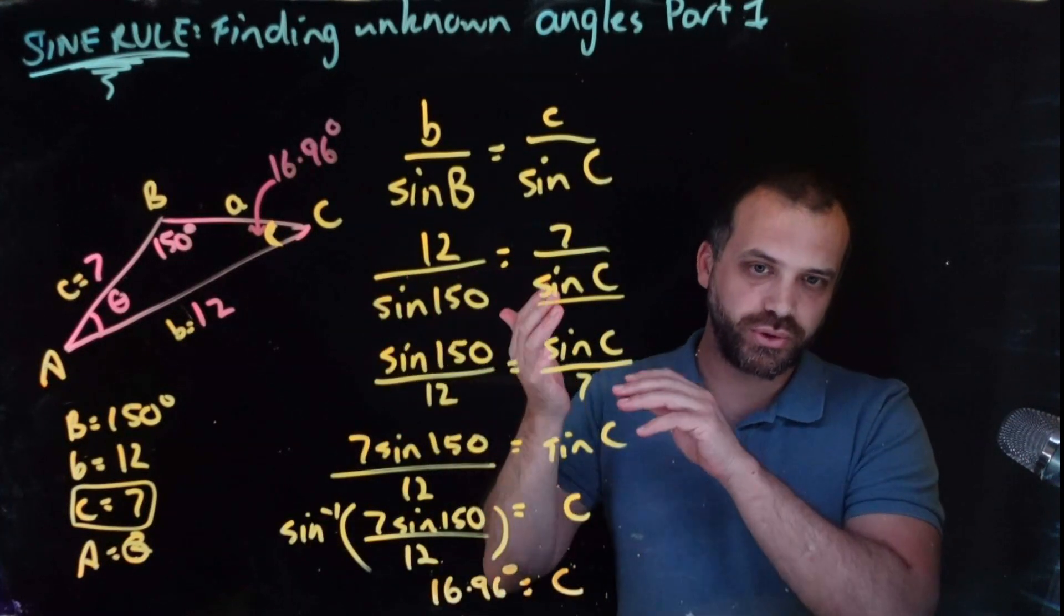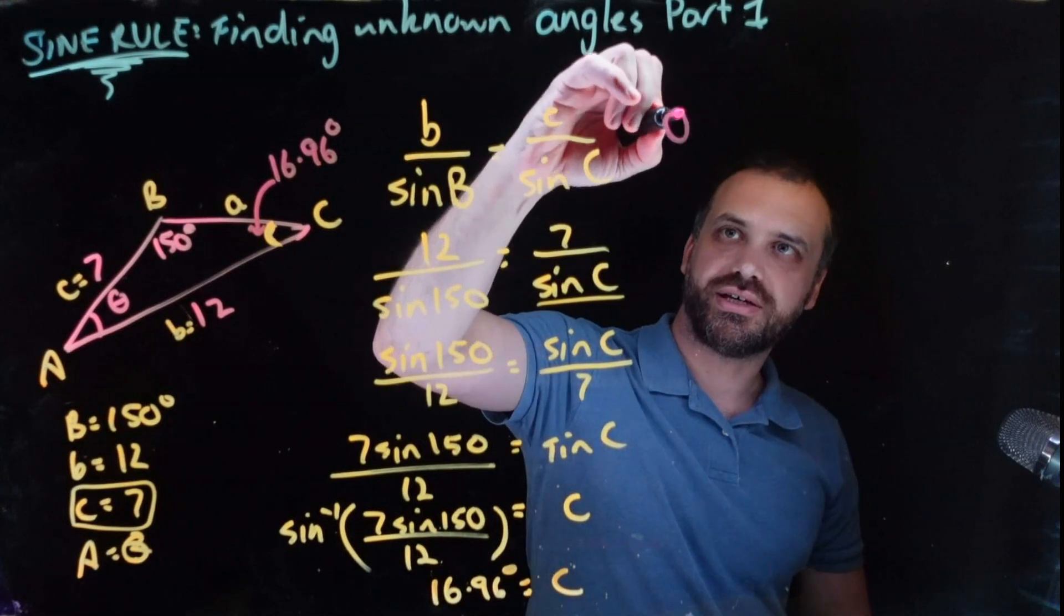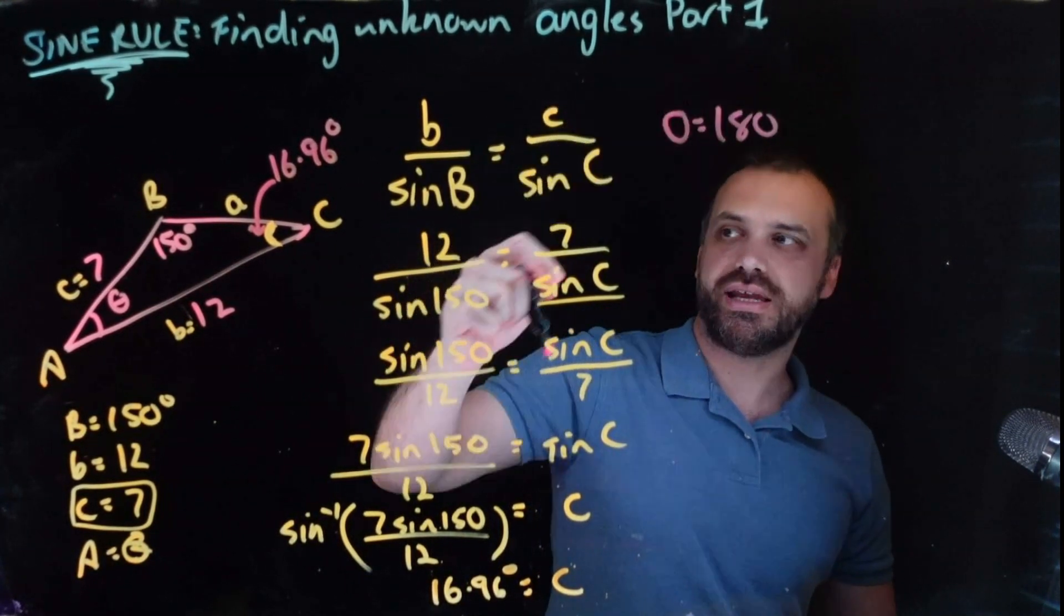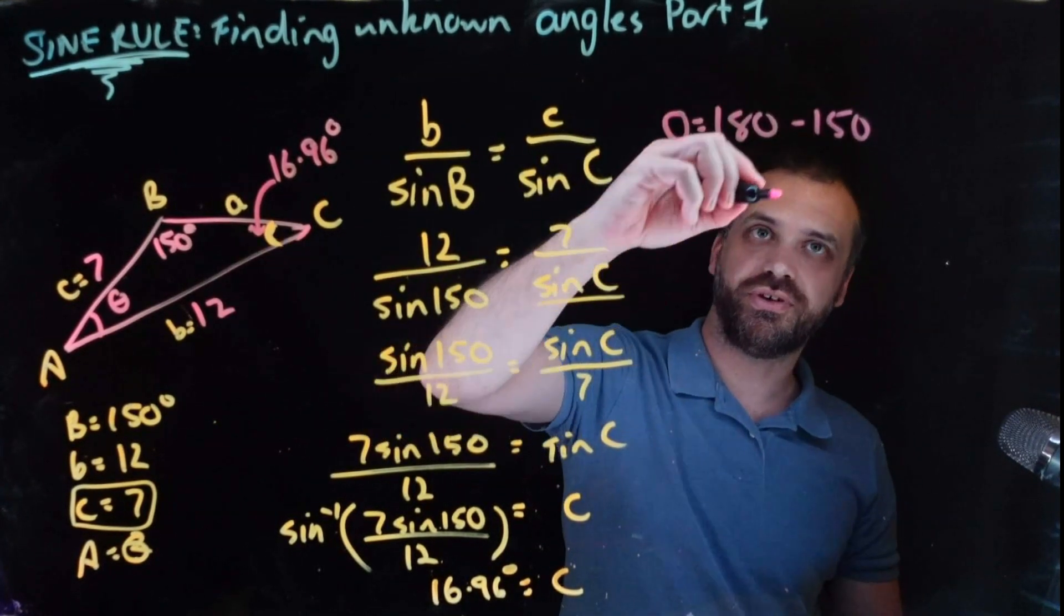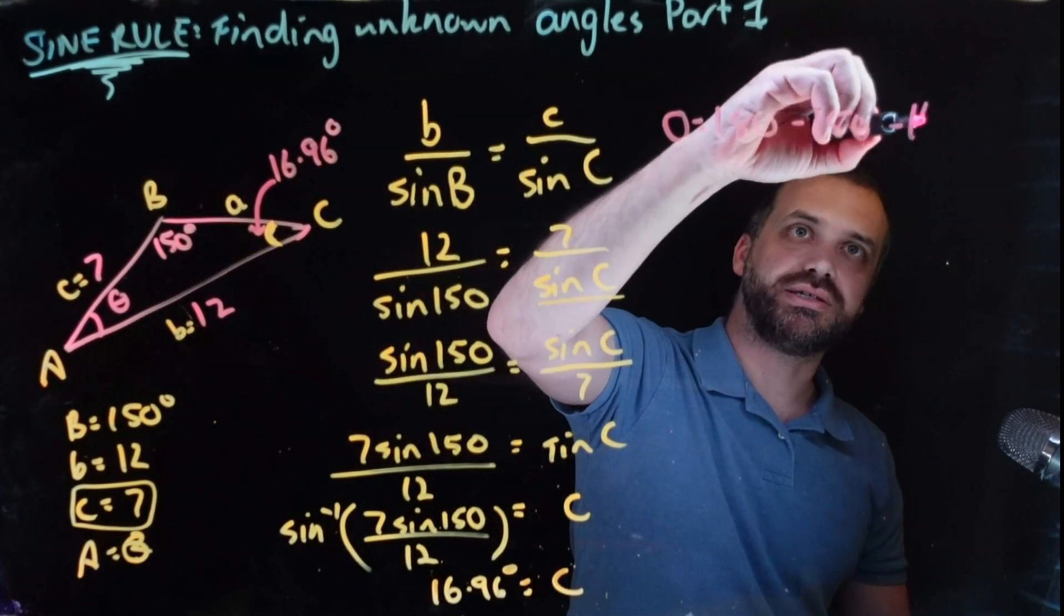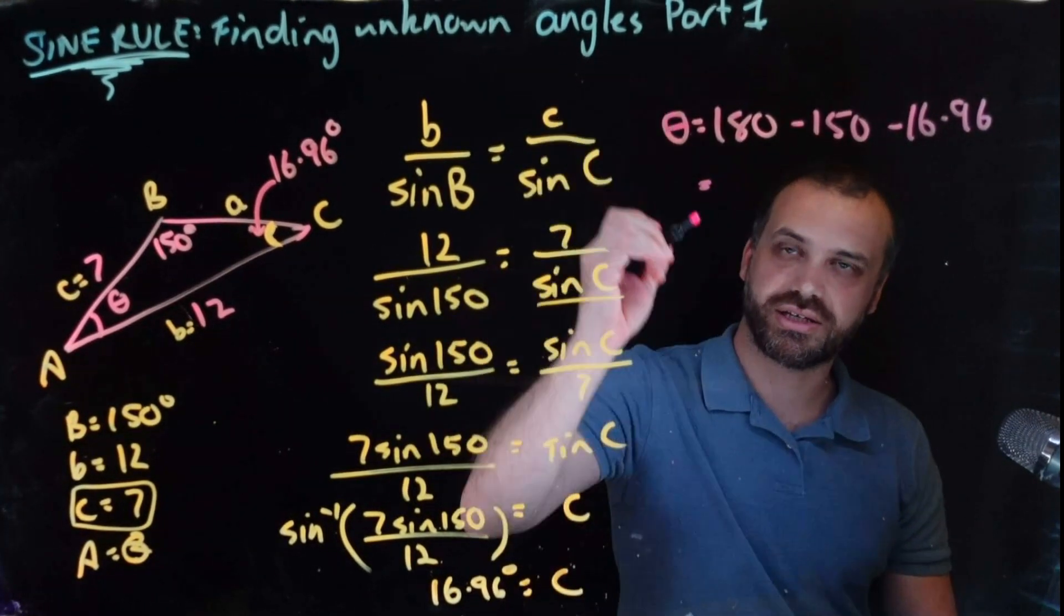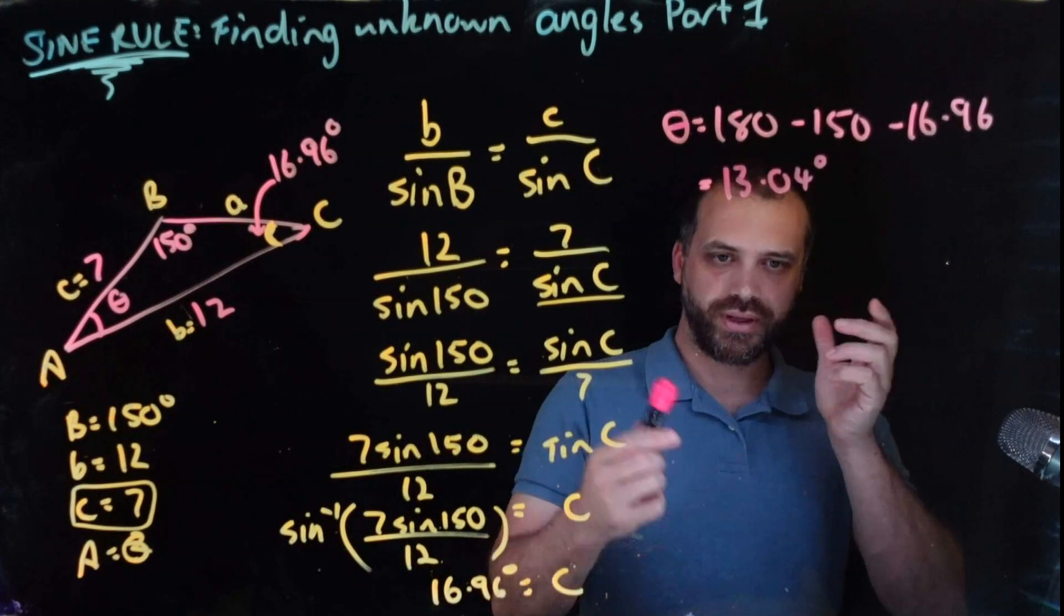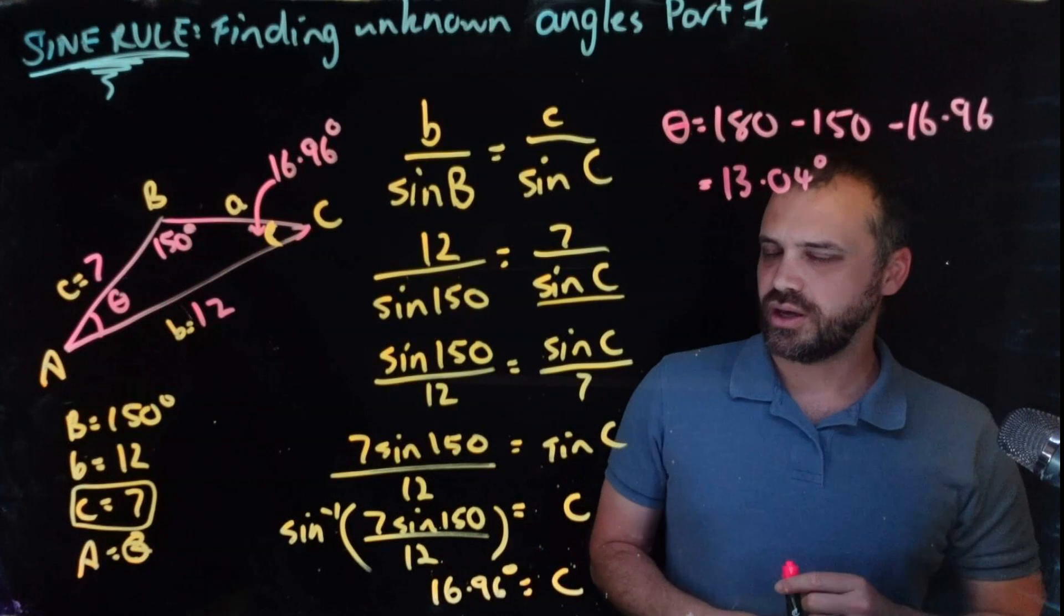But that's not the angle I wanted to find. I wanted to find theta. And theta is going to be equal to 180, which is the internal angles of a triangle, minus the one we started with, 150, minus 16.96. Alright, calculator. And there is my answer, 13.04 degrees.